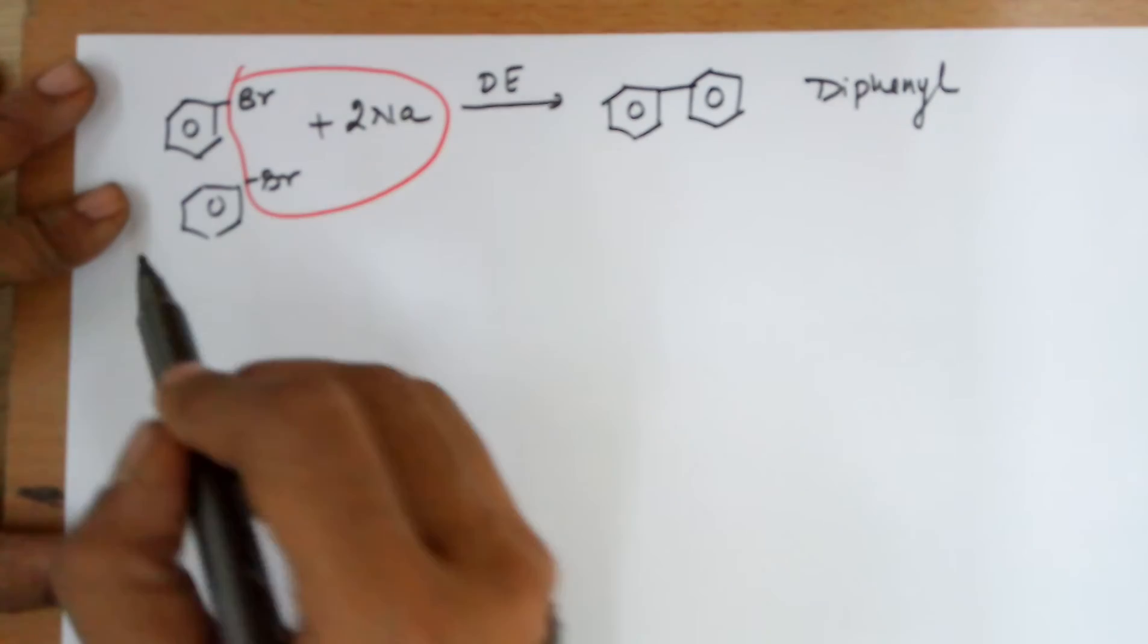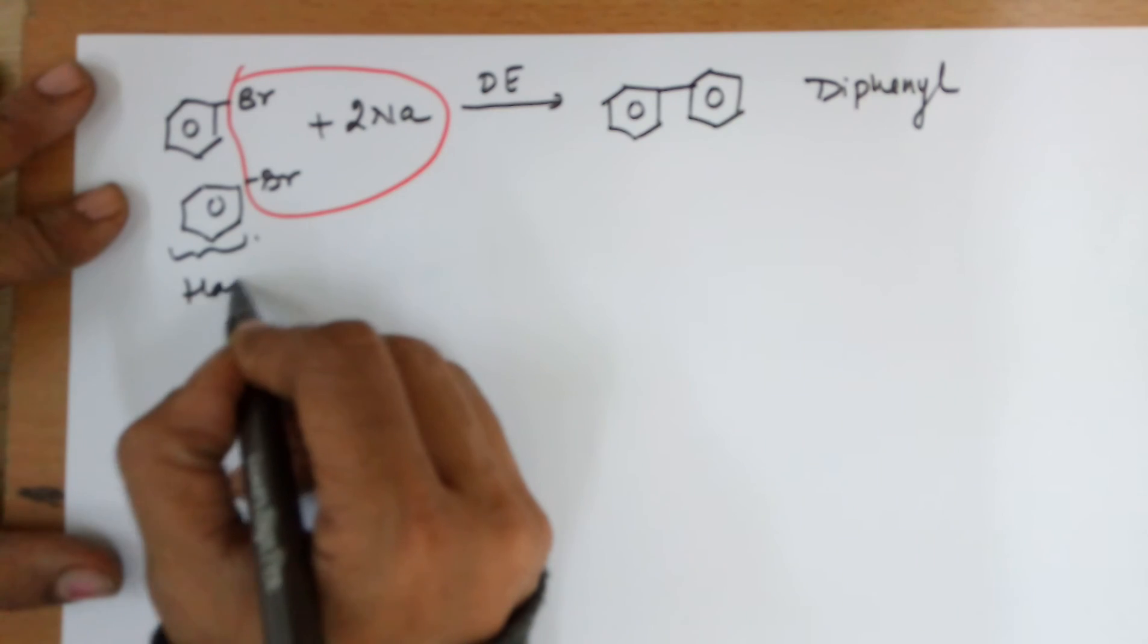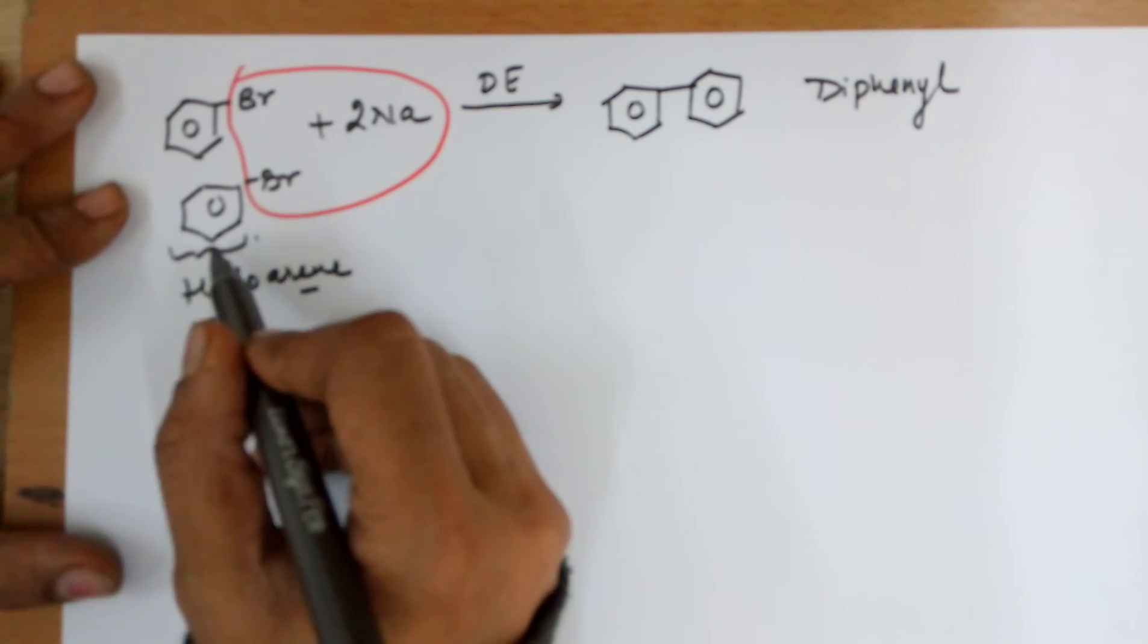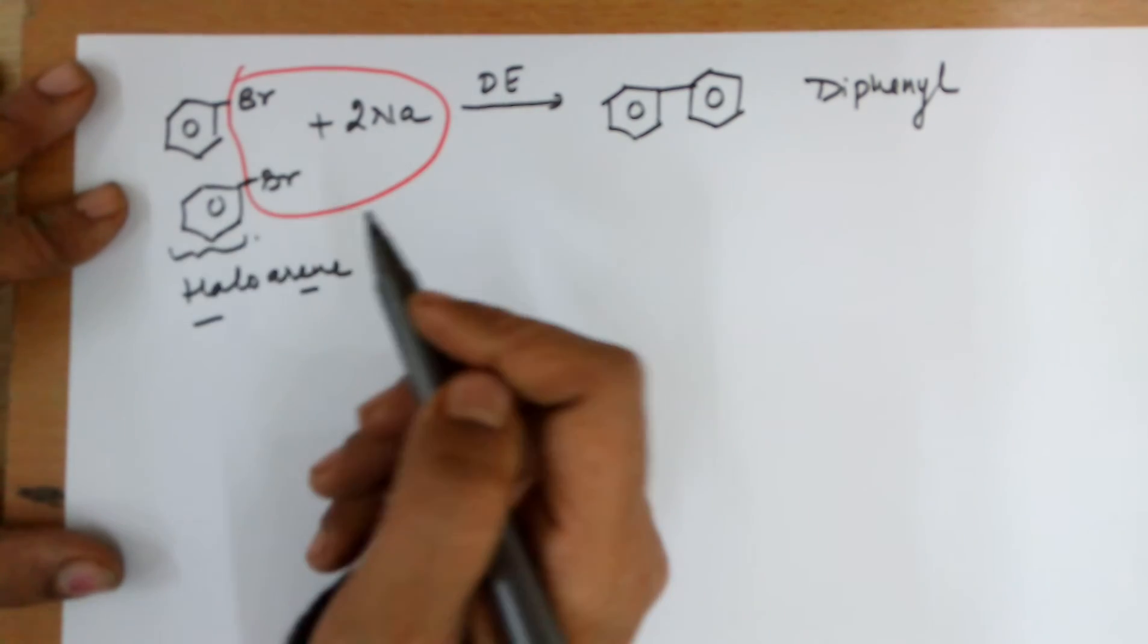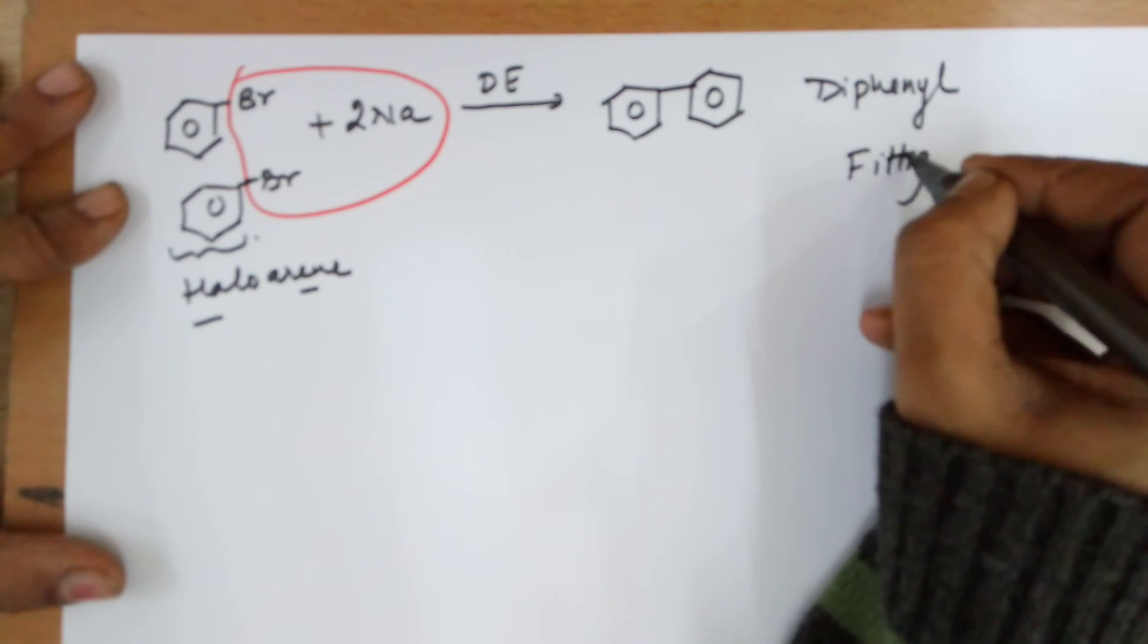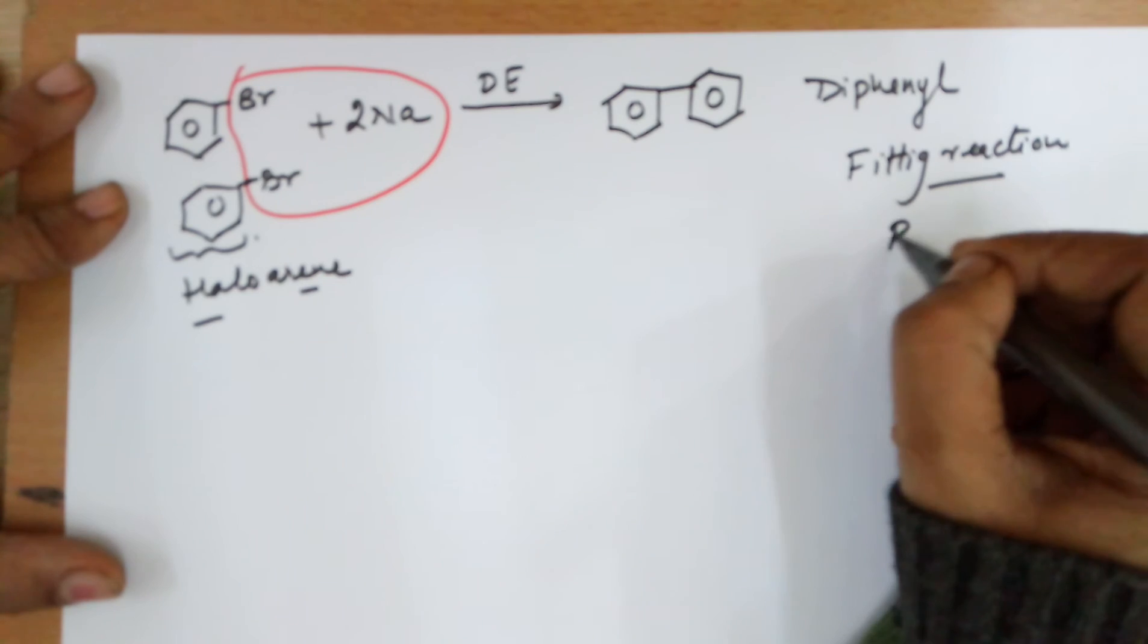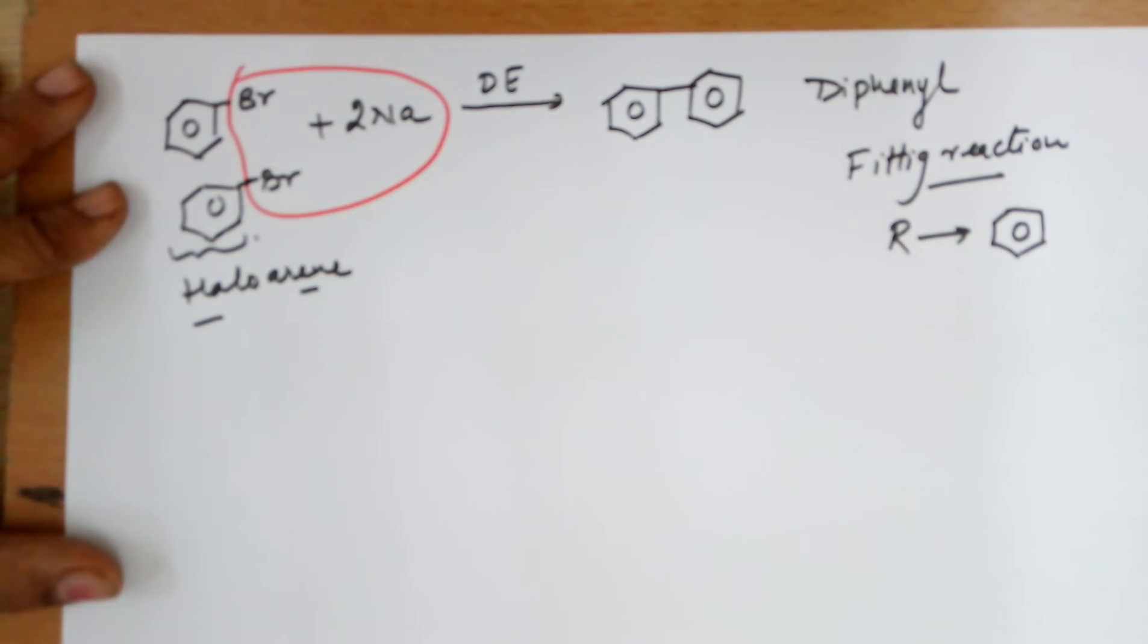Only thing is instead of R, this time we have an aromatic haloarene, where the R group, instead of R, you have a benzene ring. This reaction is similar to the Wurtz reaction but is known as the Fittig reaction since R is changing to benzene. Otherwise the reaction remains the same.